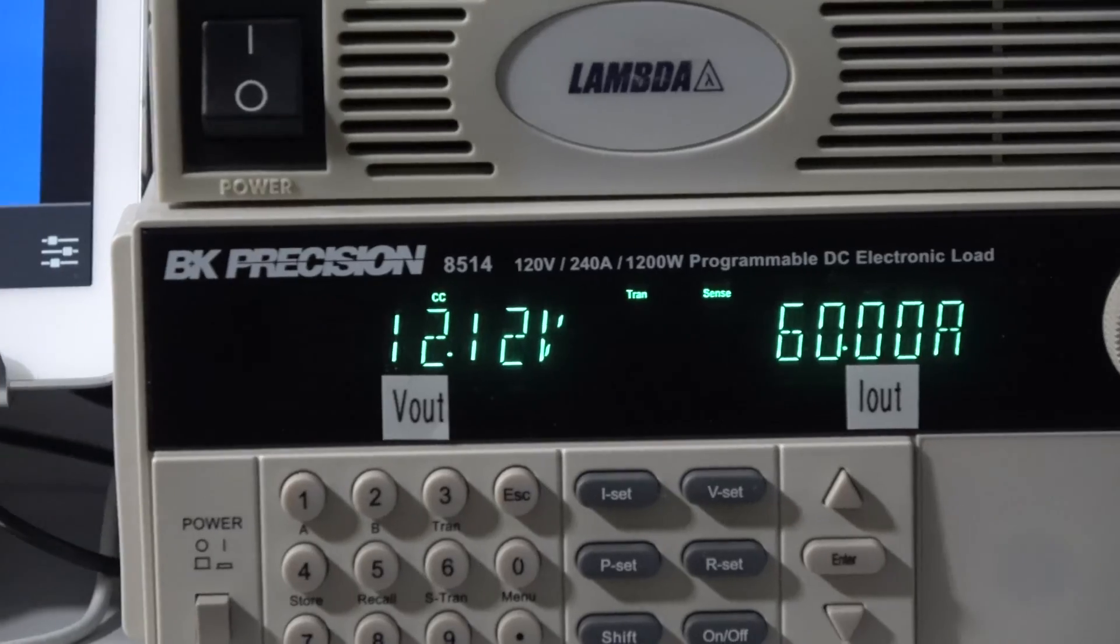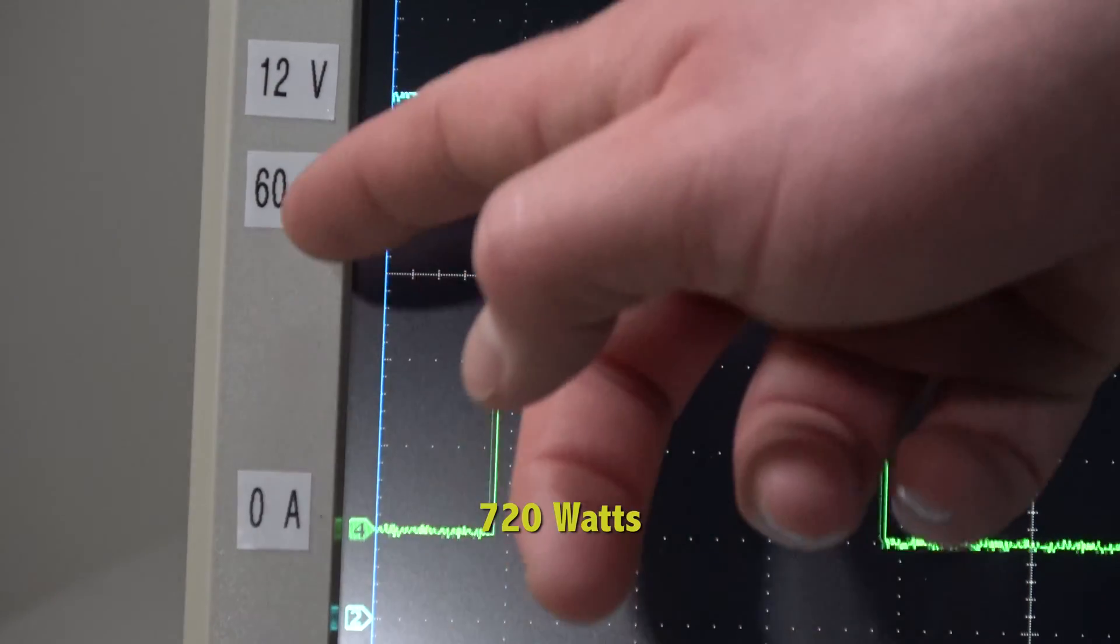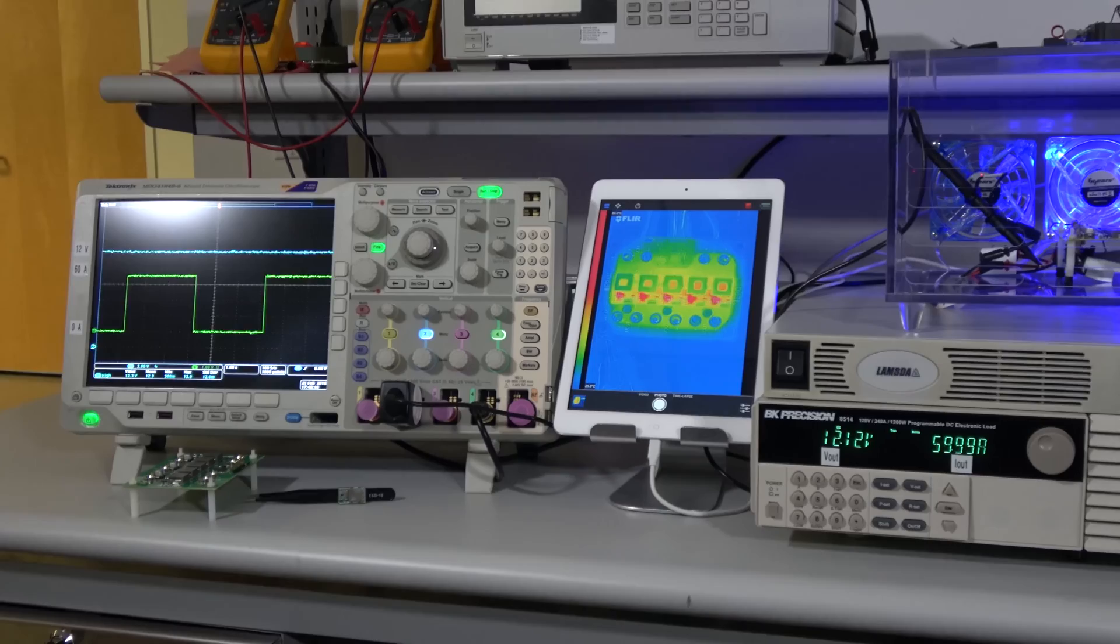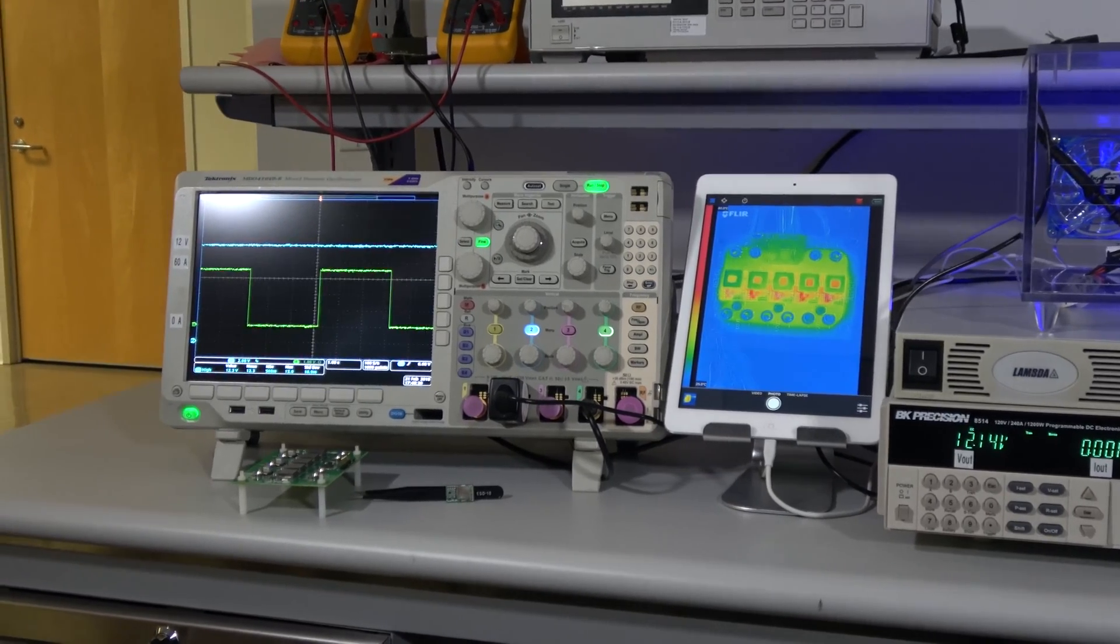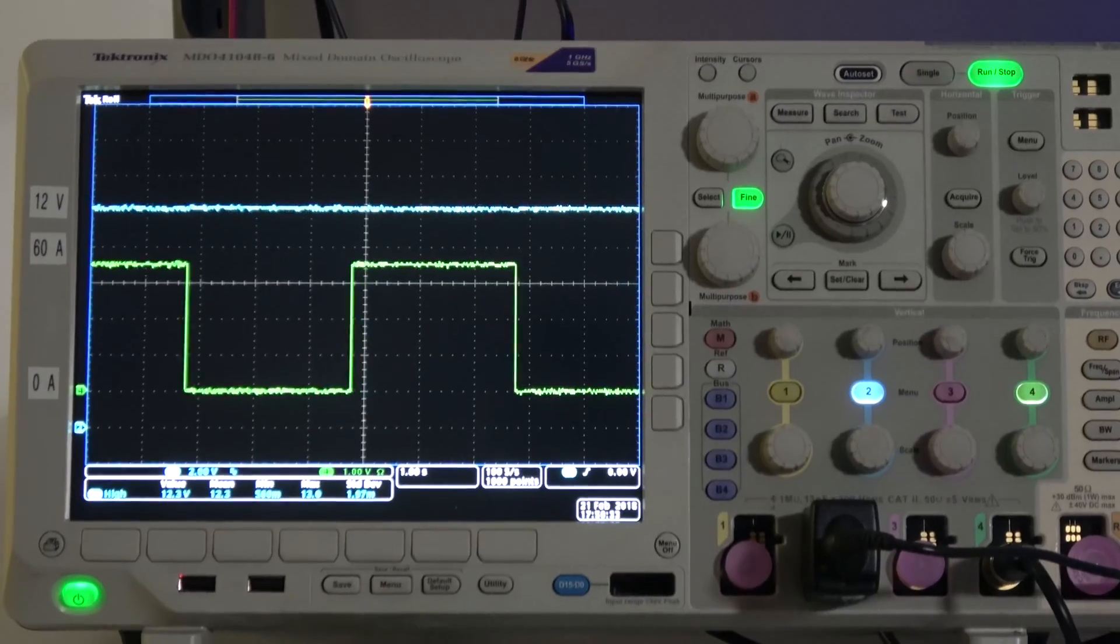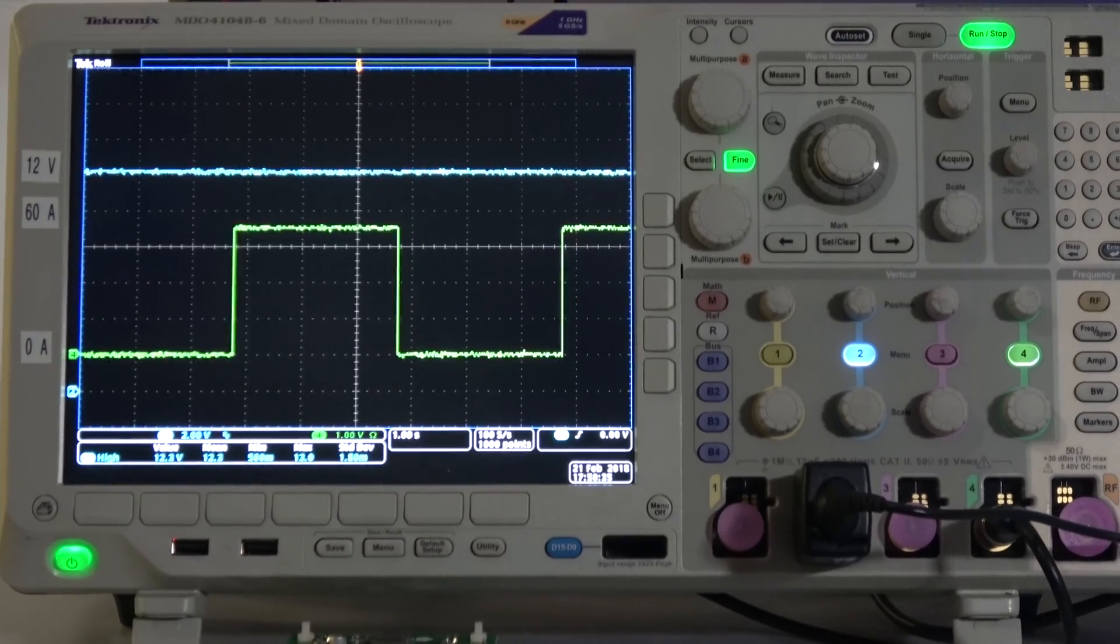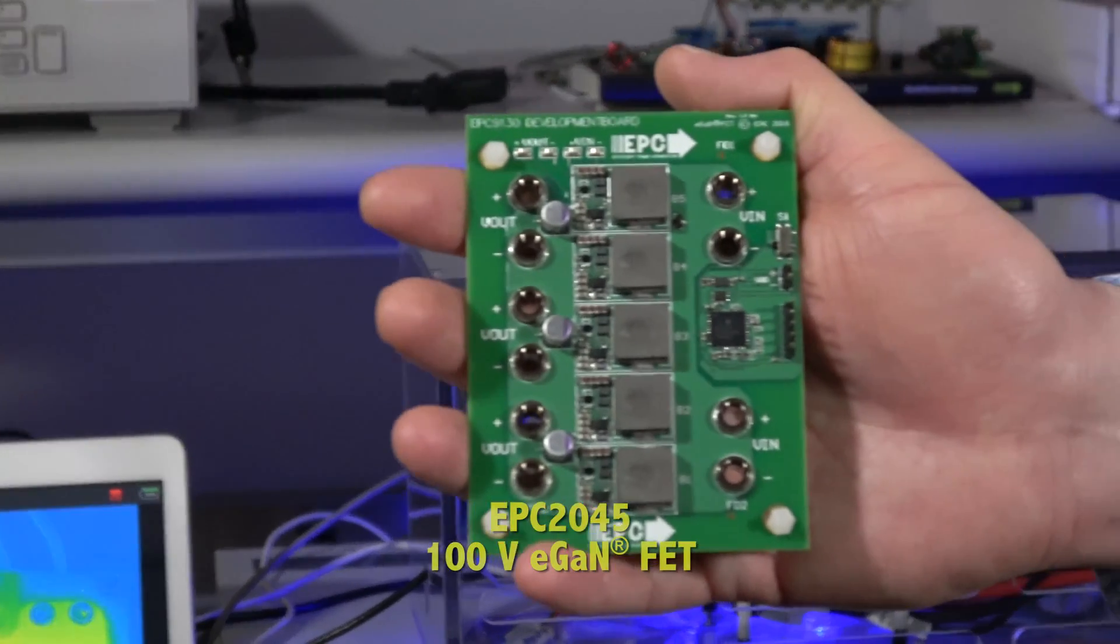Now we are pulsing the output current from no load to 60 amps, 720 watts. And here on the scope, you can see the load cycling while maintaining tight regulation.